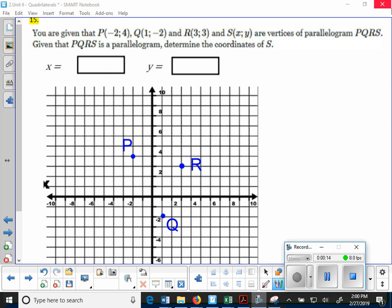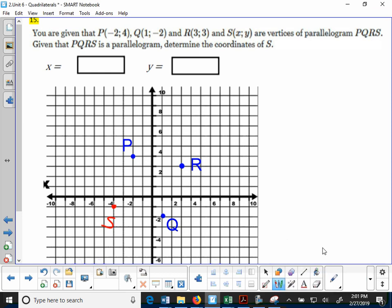We figured out that S was going to be at negative 4, negative 1 right there. The only problem with this is that this parallelogram is parallelogram PQRS. It has to go in that order. We cannot do P, Q, R, S like that.